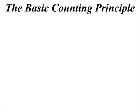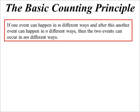So it all ties in with probability. We start with the basic counting principle. If you're talking about different events that are happening — if one event can happen m different ways, and then it's followed by another event which can happen in n different ways, then the total number of ways the two things can happen is m times n.